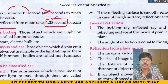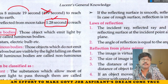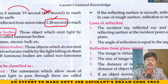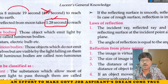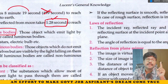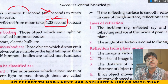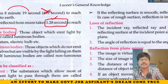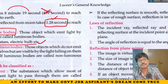Luminous bodies are those that emit light on their own — for example, the sun and stars. Non-luminous bodies are those that do not emit light on their own — everything else that absorbs or reflects light but does not produce it.